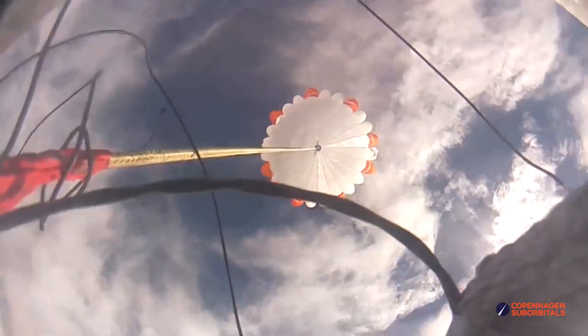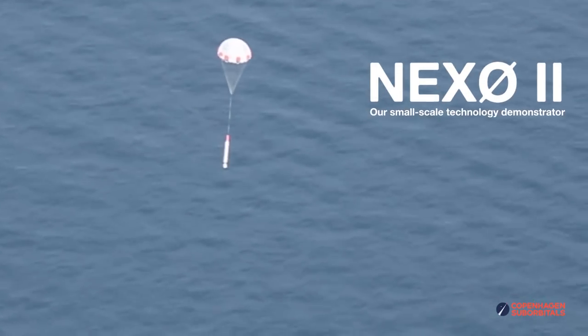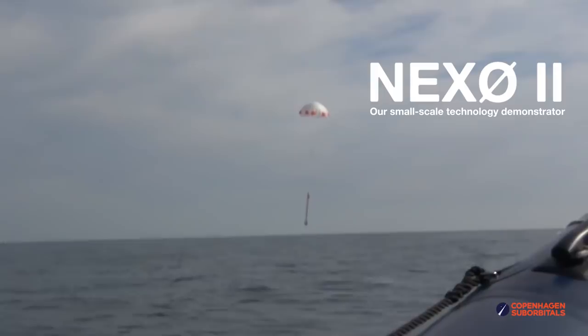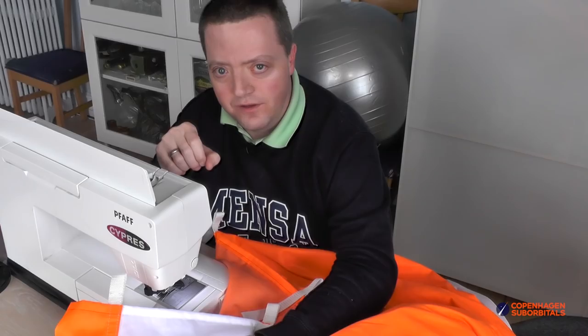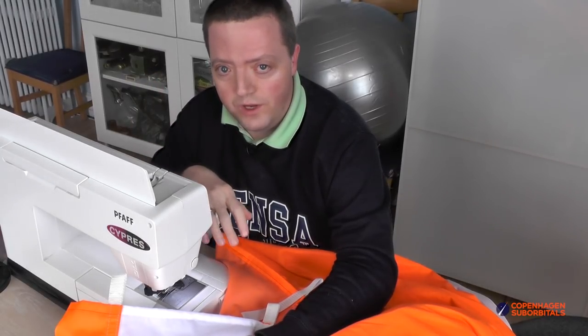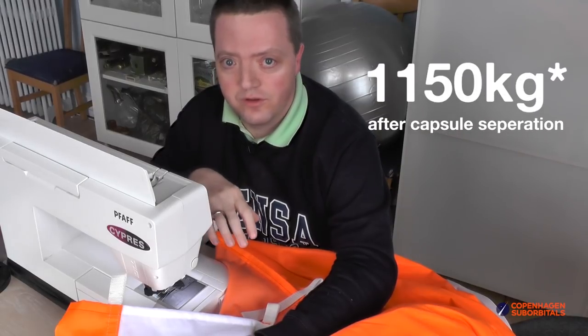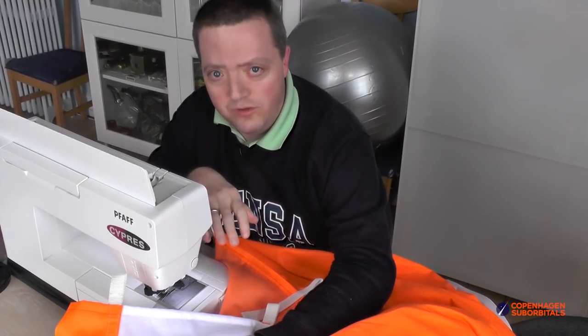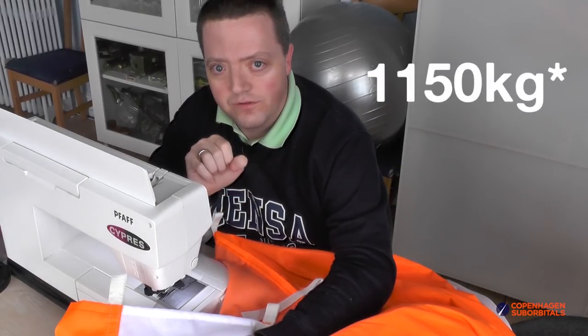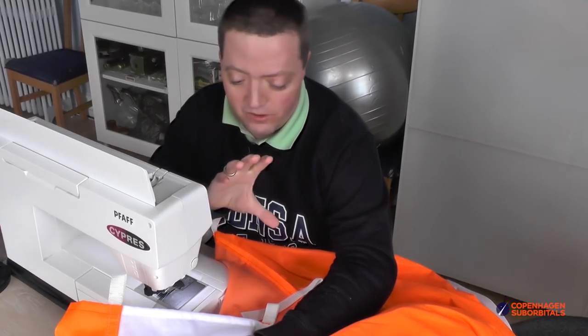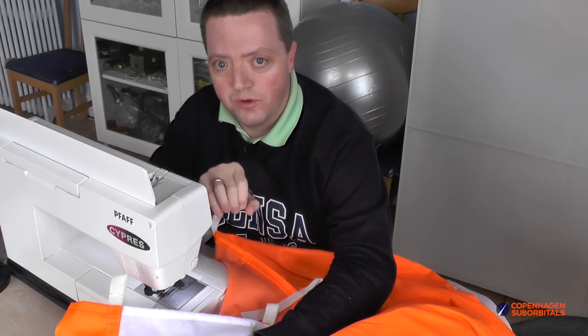The same story goes now for the booster, for the rocket part, because we also want to try to give that a soft landing. And for that we need something a little bit bigger. Where the space capsule weighs about 350 kilos, the booster will weigh about 1.5 metric tons once it has done its job. So now we need to figure out how to get 1500 kilos of mass down through the atmosphere in a safe way and getting that oriented in the right way when the main parachute is going to deploy.